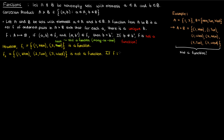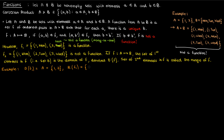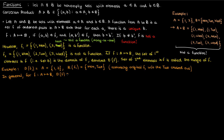Now if the function f is from the set a to the set b, then the set a, or the set of first elements in the ordered pairs, is called the domain of f, denoted by D(f). The set of the second elements is called the range of f. In our example of the function f1, the domain of f1 is just the set a, which is {1, 2}. The range of f1 is the set of second elements in f1, so just Monday and Tuesday. While the domain of a function is always the entirety of the first set a, the range is a subset of the second set b — it can equal the entire set b or just a subset.